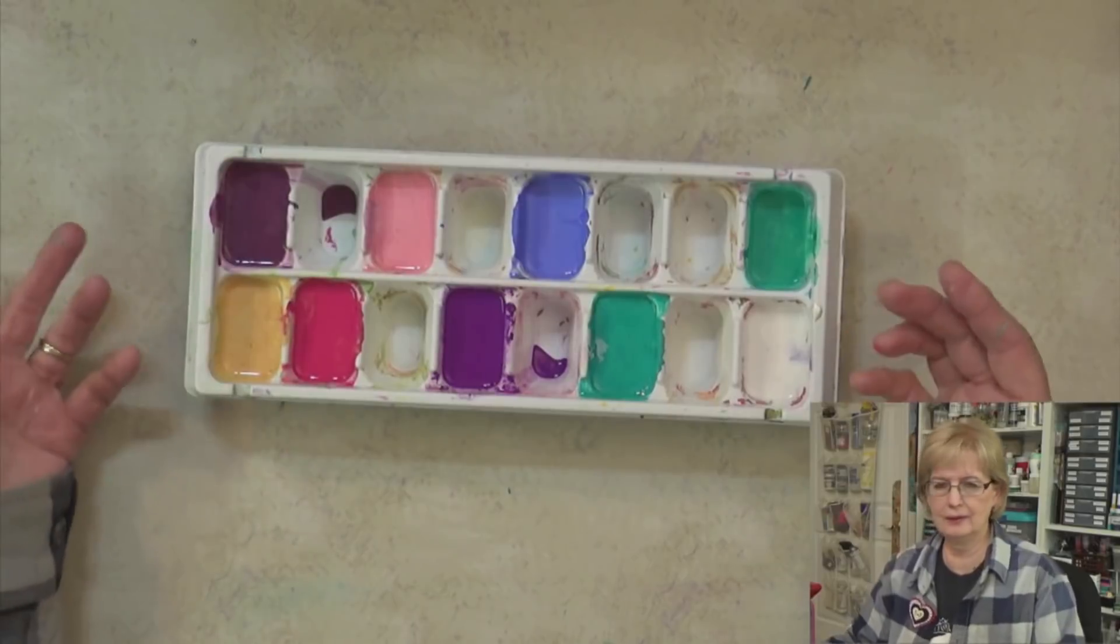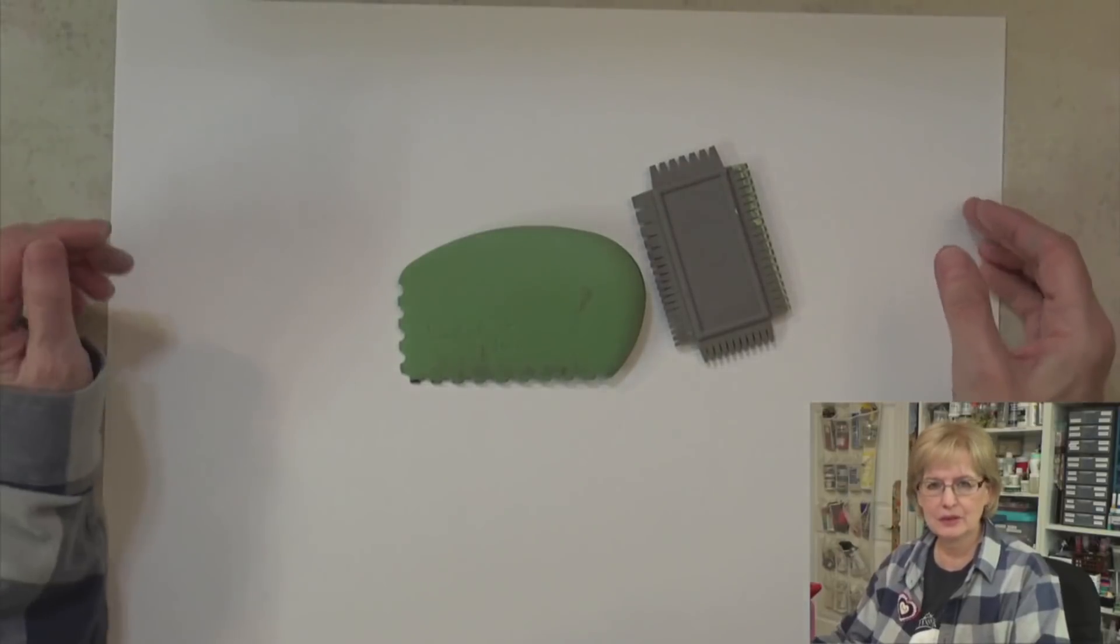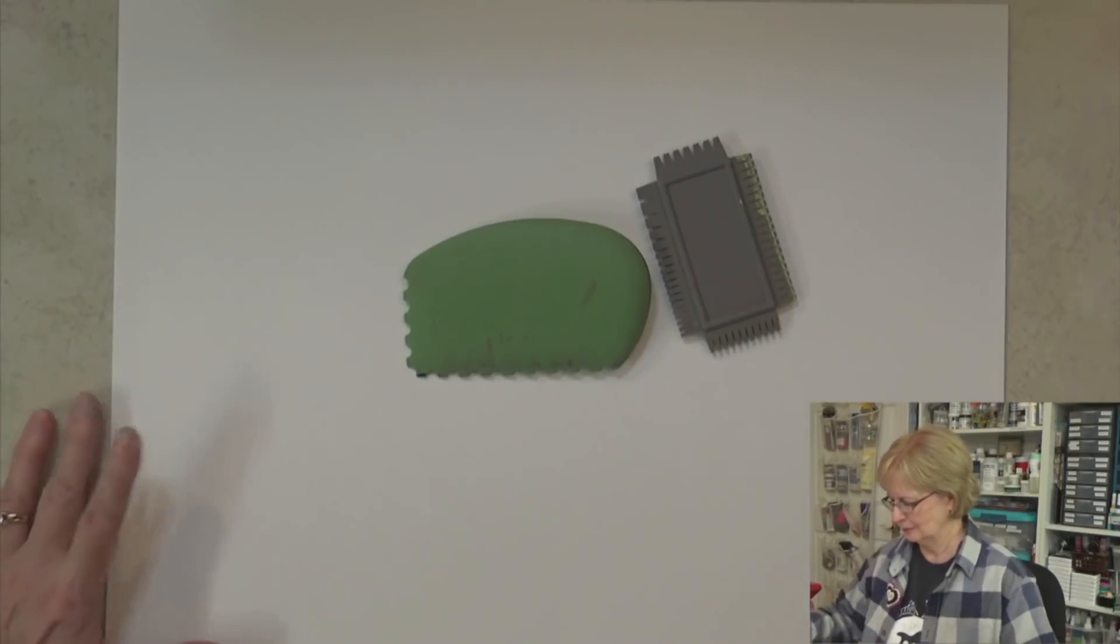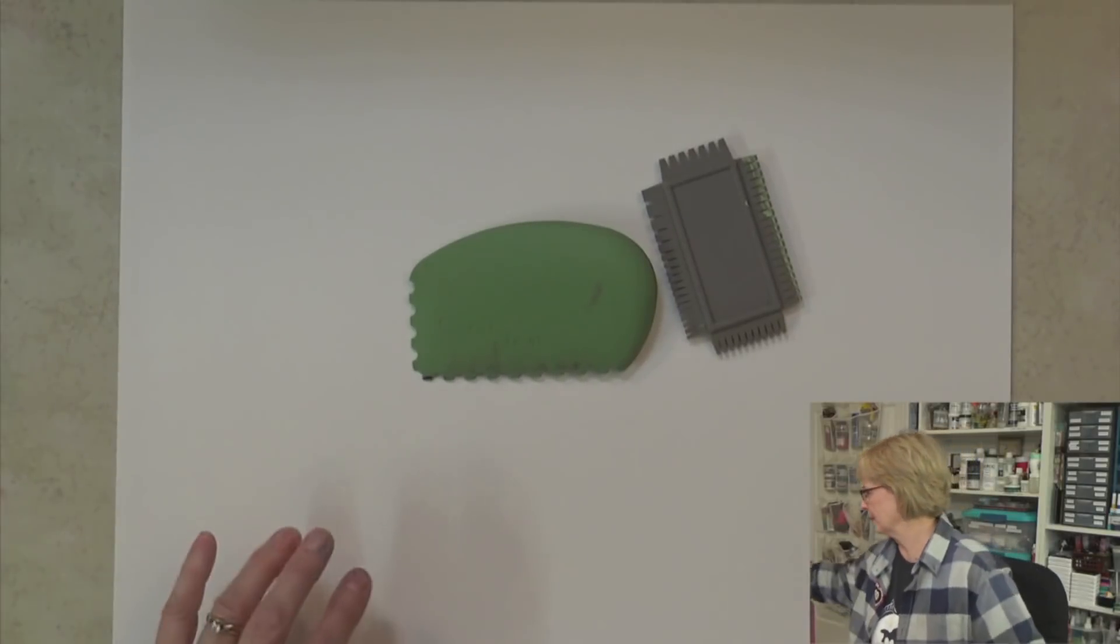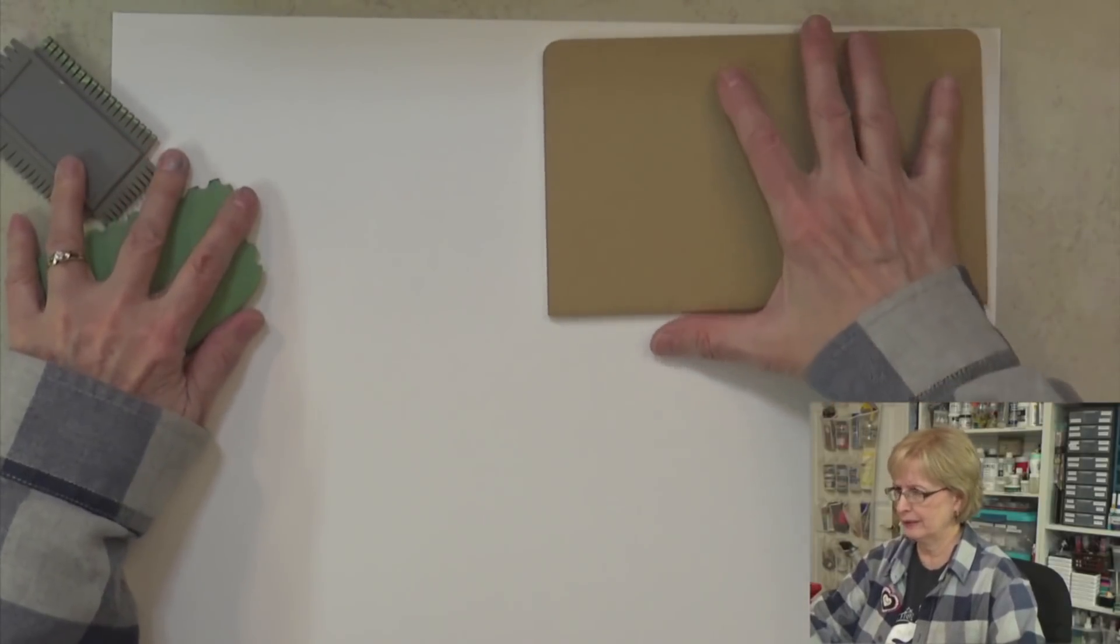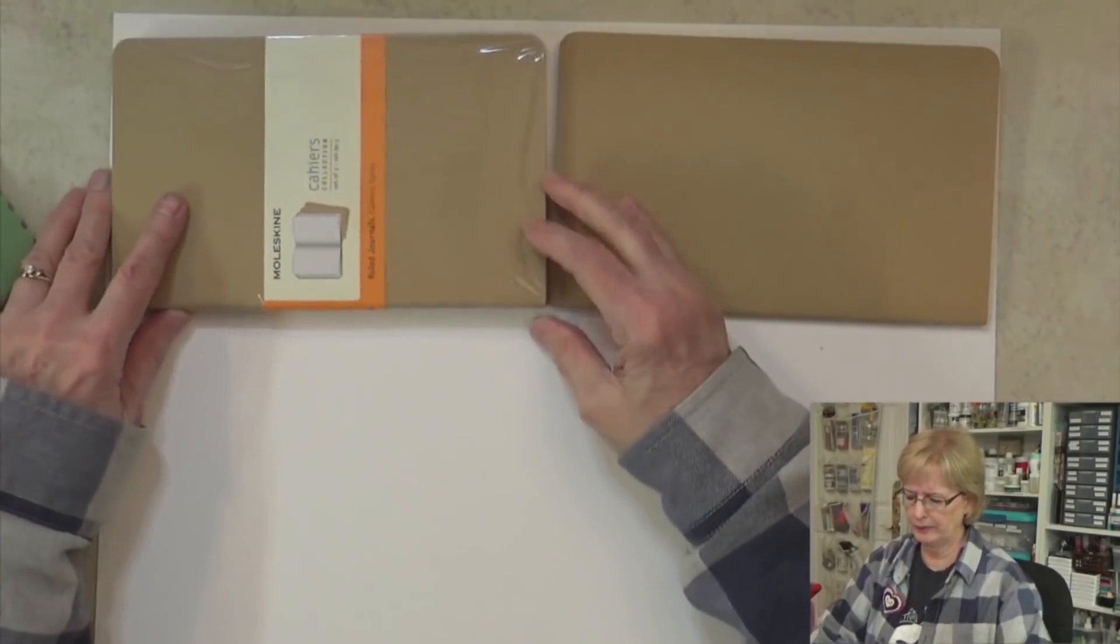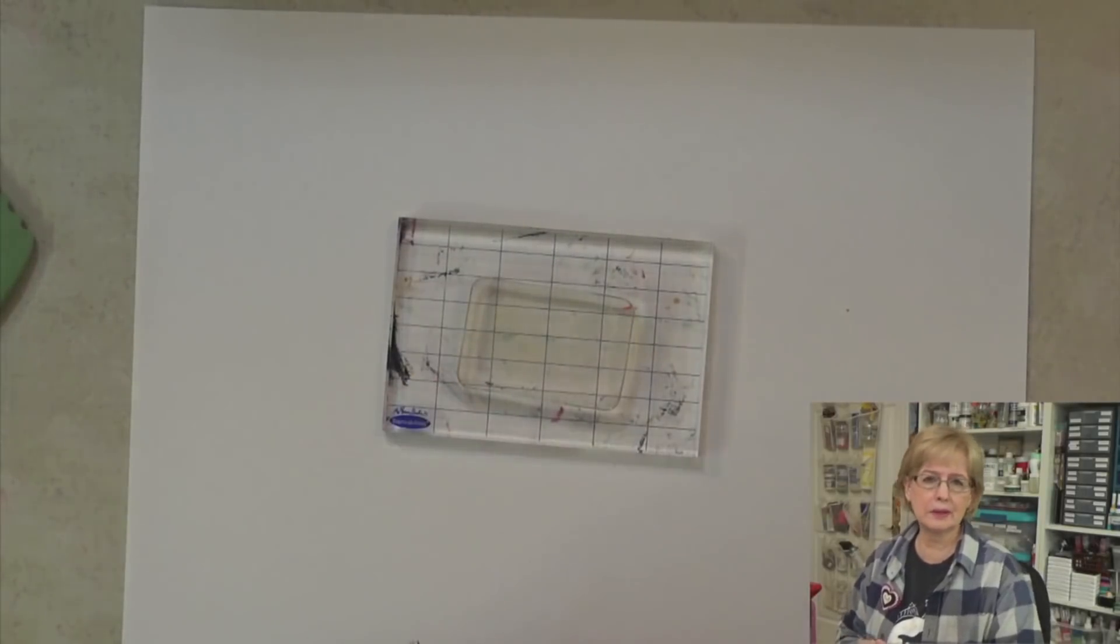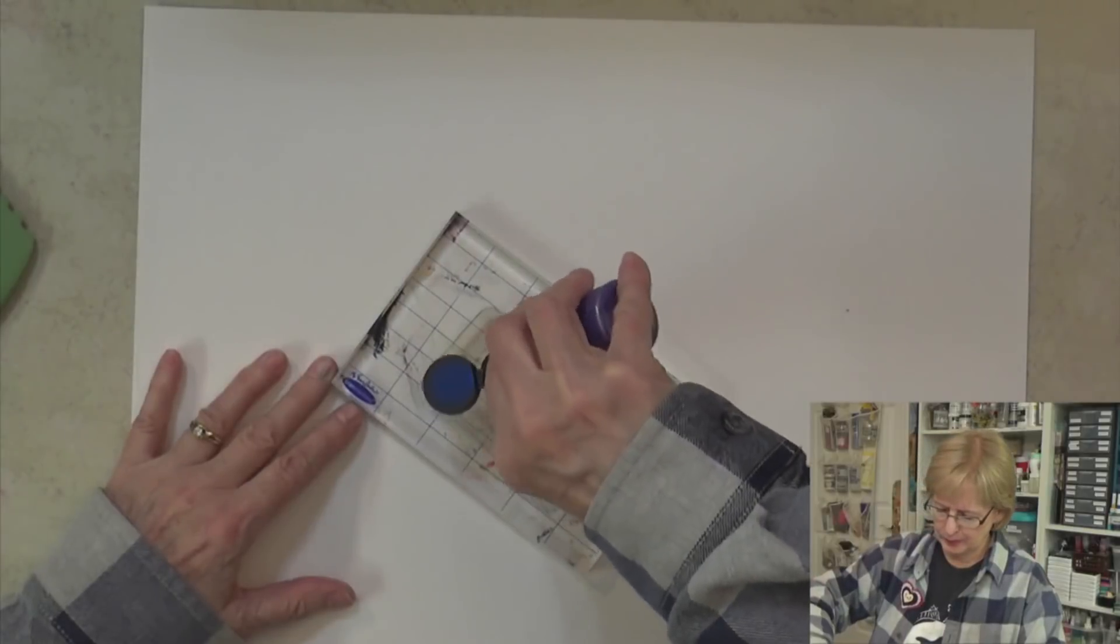The paper is Canson mixed media paper, 98 pound, and the size is I think 14 by 18 or something like that. It's a big piece of paper. It will accommodate two books—I can put a book here and wrap the cover, and another one over here. I'm going to put some of these on the plates and just see what happens.